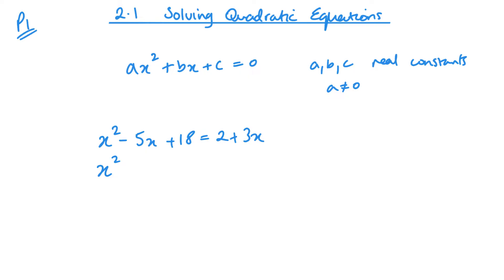Taking away 3x would give me negative 8x, taking away 2 would give me 16. Solving this, I need to look for what will multiply to give me 16 and add to give me negative 8. This is x minus 4, x minus 4, or x minus 4 squared. The solution is x minus 4 equals 0, so x equals 4.